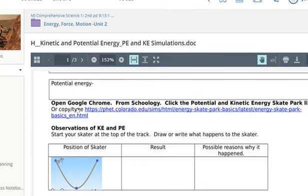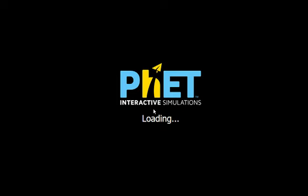Then I've got these instructions. Open Google Chrome. From Schoology, click the Potential and Kinetic Energy State Park link. Oh, look, it's right here. So I'm just going to go ahead and click on that. Once I click on it, this is going to open up.